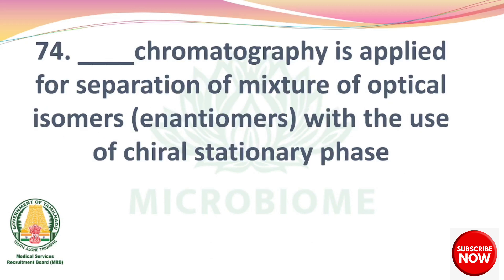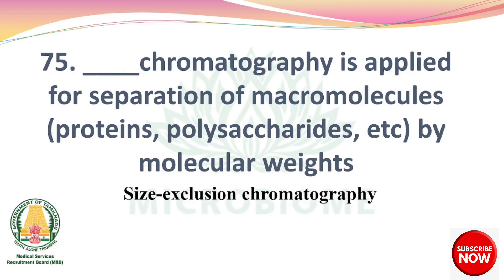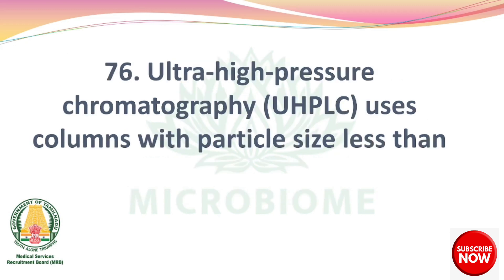Next, dash chromatography is applied for separation of optical isomers (enantiomers) with the use of a chiral stationary phase — chiral chromatography. Next, dash chromatography is applied for separation of macromolecules such as proteins and polysaccharides by molecular weight — size exclusion chromatography. Ultra-high pressure chromatography (UHPLC) uses columns with particle size less than 2 mm.